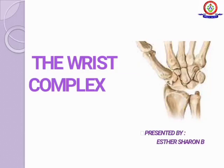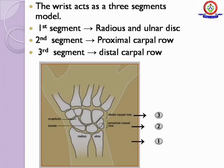Hello everyone, I'm Mr. Sharon. In this video we're going to see about the functions of wrist complex. The wrist acts as a three segment model. The first segment is radius and ulnar disc, the second segment is proximal carpal row, and the third segment is distal carpal row.